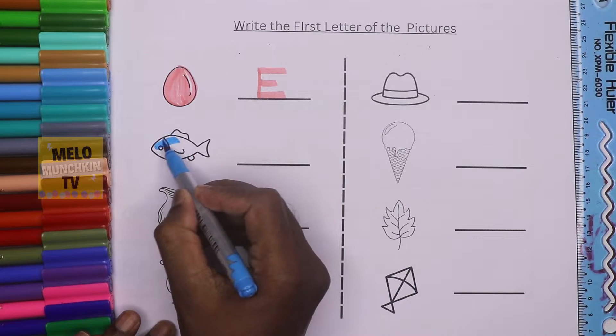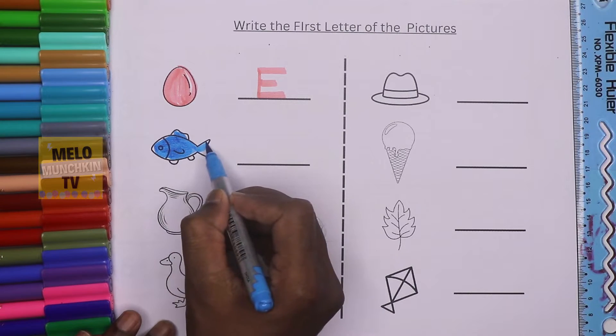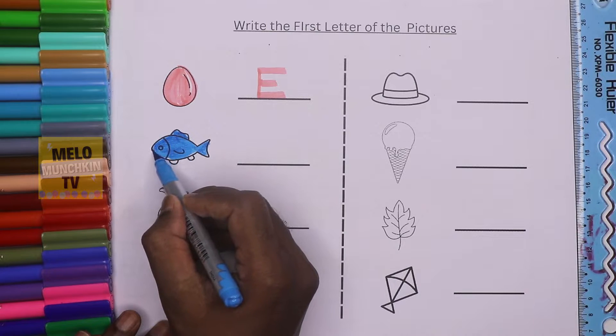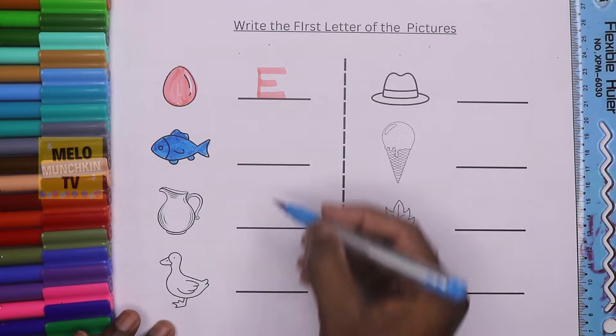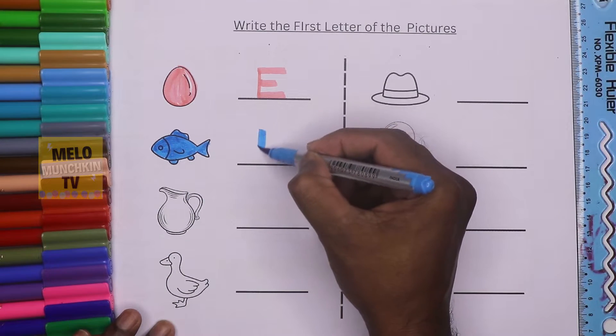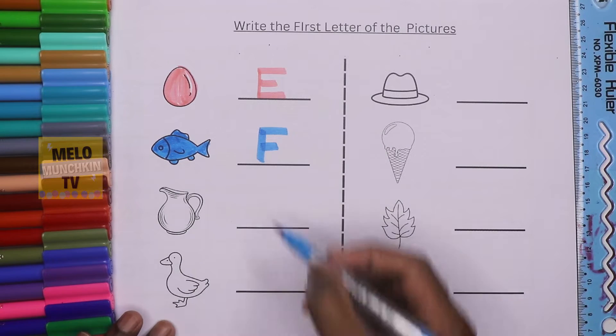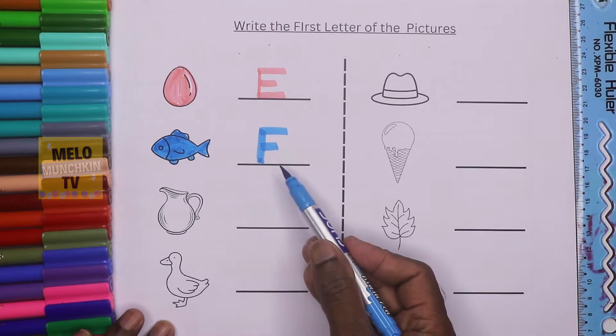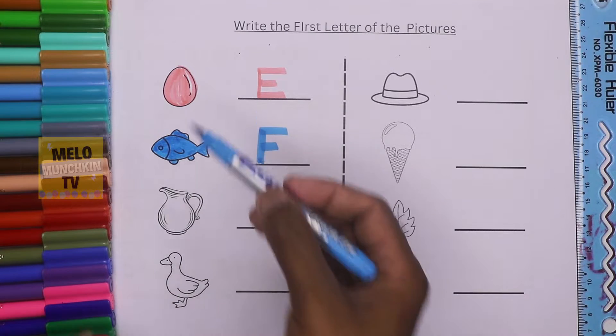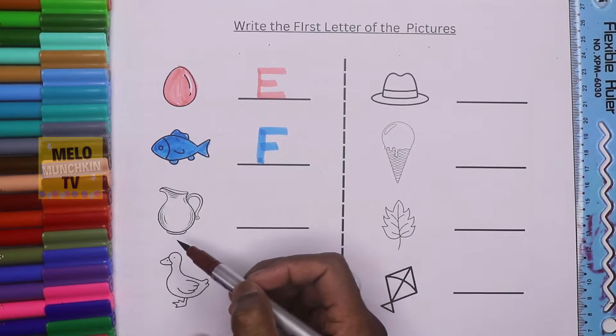This is jug. This picture is jug. I'll take brown color to color this jug. J for jug, J for jug.